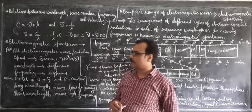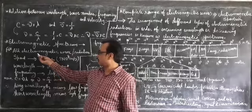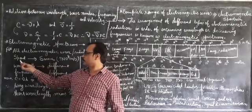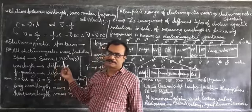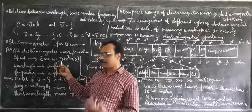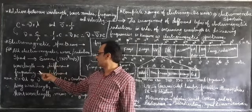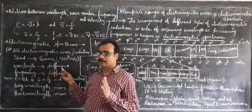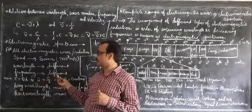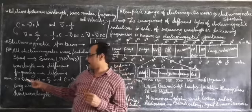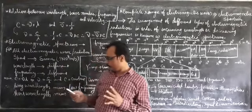First, let's recapitulate the characteristics of electromagnetic waves. The speed of all electromagnetic waves is the same — approximately 3 × 10⁸ meters per second, which is the speed of light. The wavelength of different electromagnetic radiations is different, and since speed is constant, frequency will also be different for all electromagnetic waves.